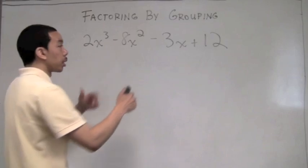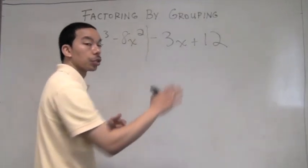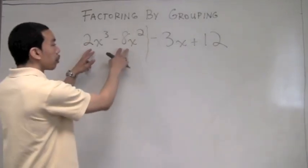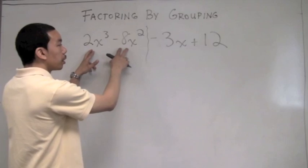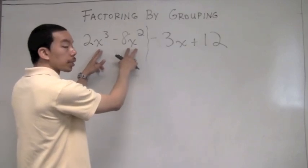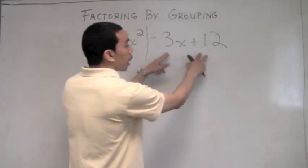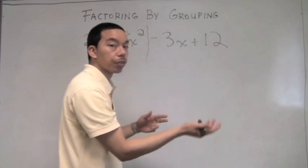So I'll group the first two terms together and the second two terms together. This is because the first two terms have a GCF of 2 and they both have x's in common. The last two terms have a GCF of negative 3.